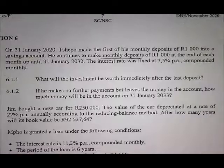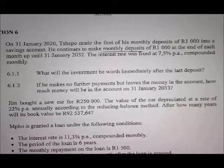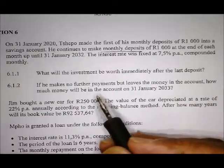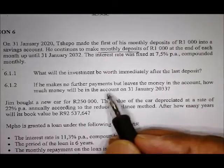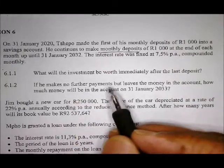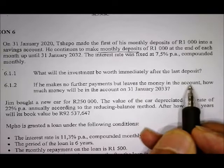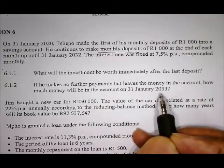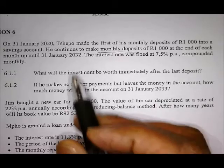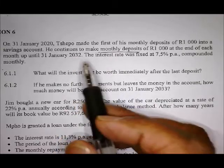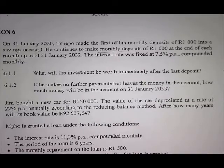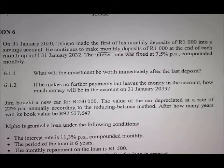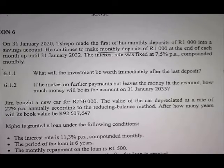Then the next question, 6.1.2. If he makes no further payments, but leaves the money in the account, how much money will be in the account in 2033? So that's an extra year. 2032 to 2033 is an extra year. Now remember, there's no more. It doesn't do any deposits anymore. The money is just lying in the bank.